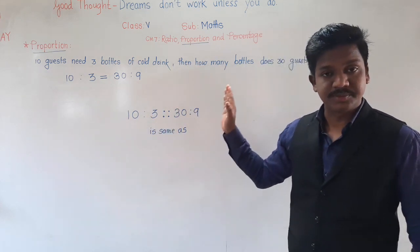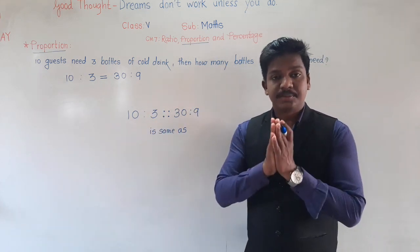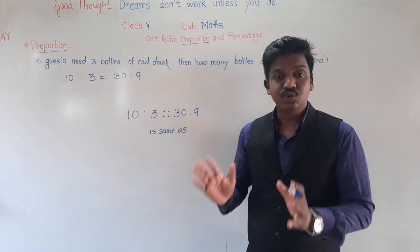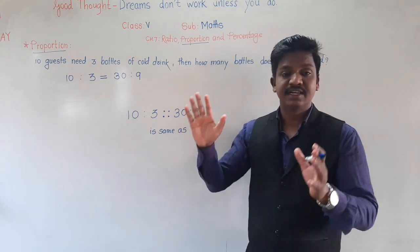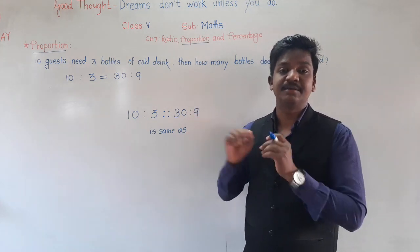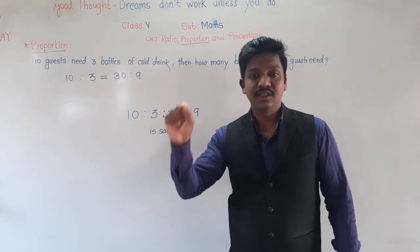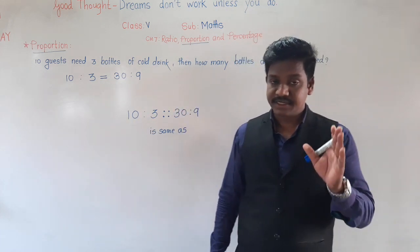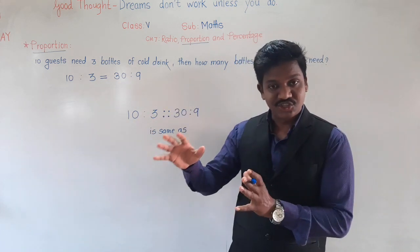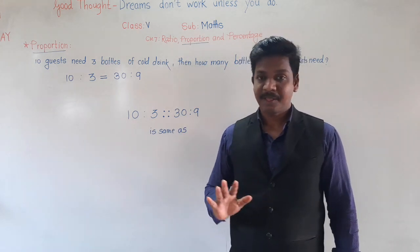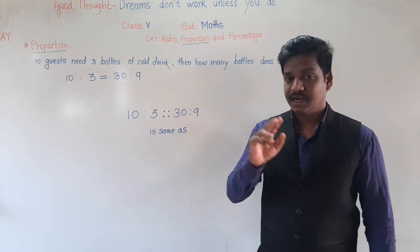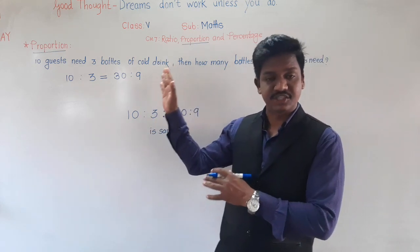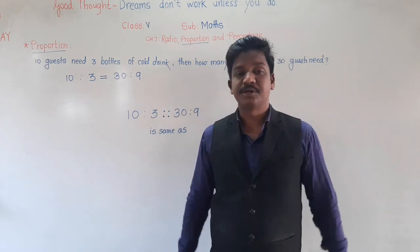The concept of proportion means: if two ratios are equal, then we say they are in proportion. Once again — proportion means when two ratios are equal. Proportion is the next step of ratio. Ratio means division of two numbers, and proportion means when two such ratios are equal.